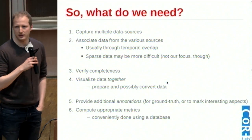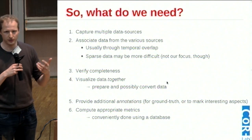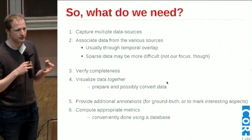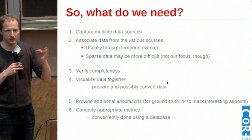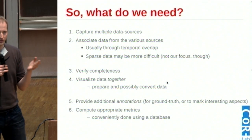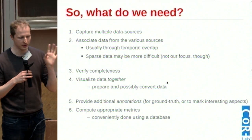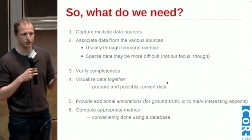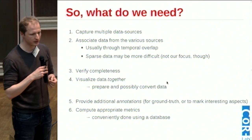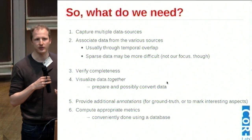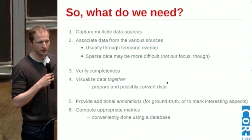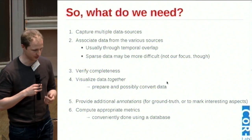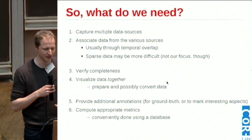For this sort of view of your robot's performance, you first need to capture various data sources, and then you need to associate that data so you know which belongs together. The easiest method for association is temporal overlap — if you have a camera view at a certain time and robot data at a certain time, they match. Then if you're recording for days or weeks, you need to verify completeness so you don't have holes. The first step is usually visualization, which can take some preparation and conversion. You also need annotations to provide ground truth of what actually happened versus what the robot thought happened. And at the end you might compute some metrics using the database.